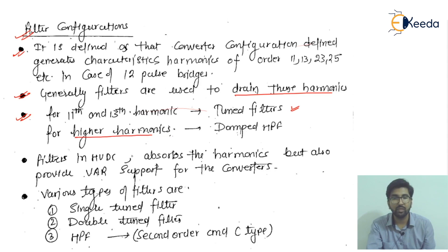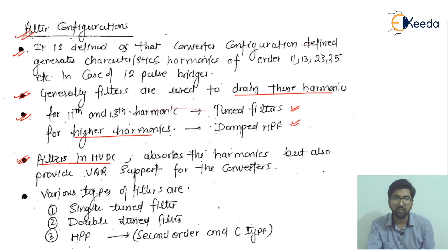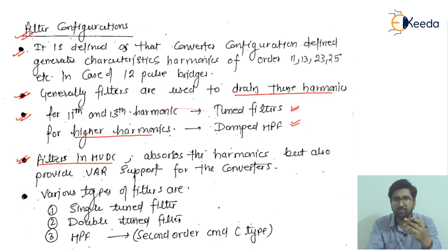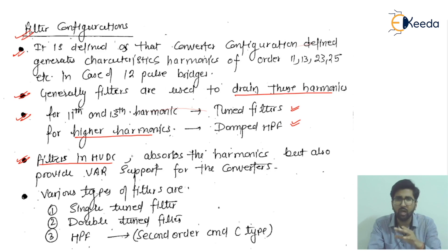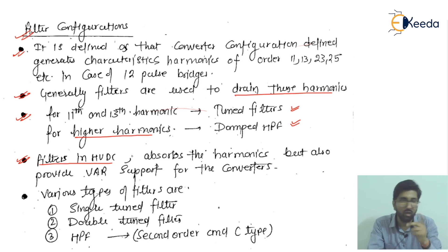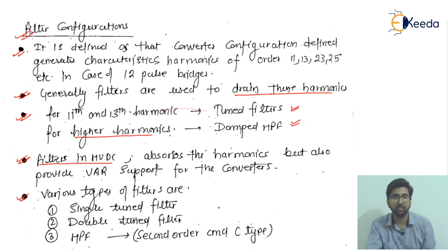Filters in HVDC not only absorb harmonics but also provide VAR support for the converters. The filters designed for HVDC are based on innovative and modern technology. So they perform two functions: absorbing the harmonics and providing VAR support to the converters. This is a key benefit of using filters in HVDC.